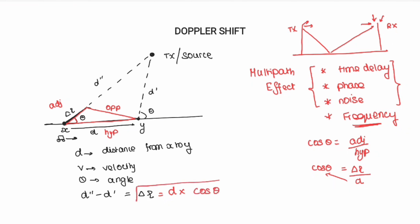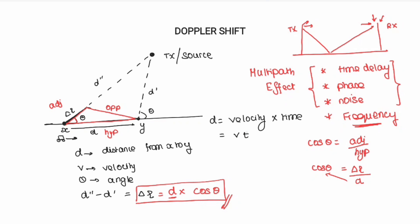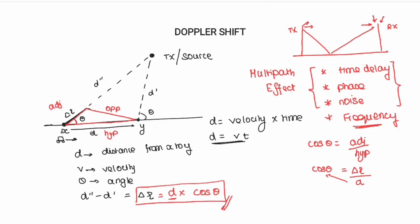Now, the time taken to cover the small distance del L is denoted as del T. So del L corresponds to del T time. We need to travel from X to Y, and the time for that small distance is del T.